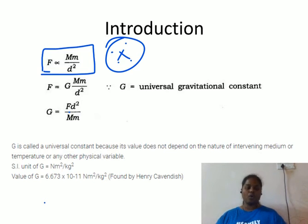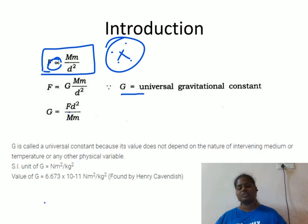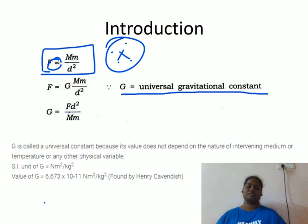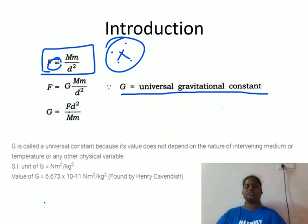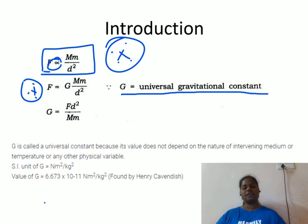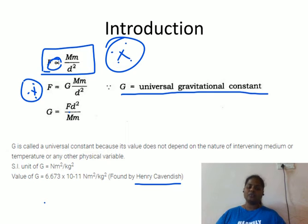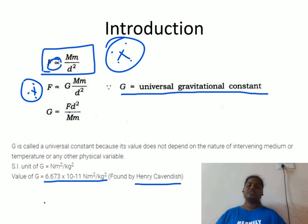If I want to remove the proportionality symbol, I have to introduce one constant. That constant is nothing but the universal gravitational constant. If I introduce capital G in this formula, I can remove the proportionality symbol. The formula becomes: F equals capital G times capital M times small m divided by d squared. We can also rearrange this formula to find capital G: G equals F times d squared divided by capital M times small m. Henry Cavendish found that the value of the universal gravitational constant is 6.673 into 10 to the power minus 11. You have to memorize this value — it is also a very important question.